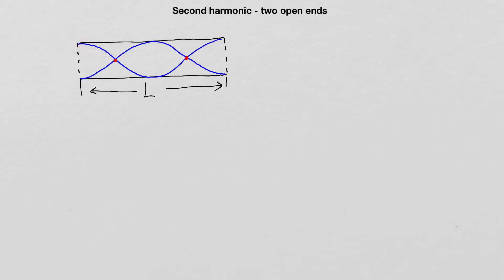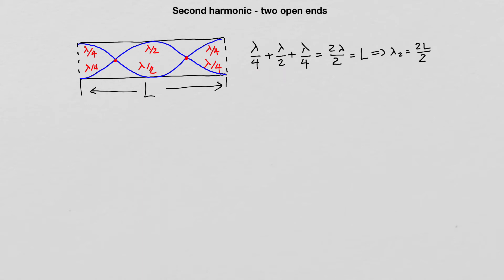Looking at the branches of the wave: we have λ/4, then λ/2, then λ/4. The pipe length therefore corresponds to one quarter plus one half plus another quarter of the wavelength, which equals two halves — equal to the pipe length L. In other words, the wavelength of the second harmonic, λ₂, is equal to two times the length of the pipe divided by two.